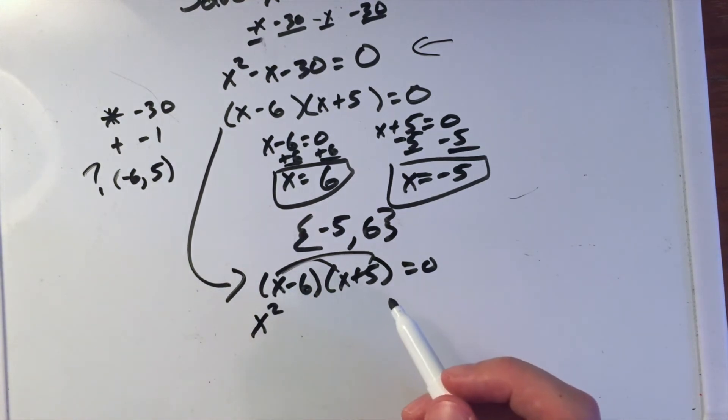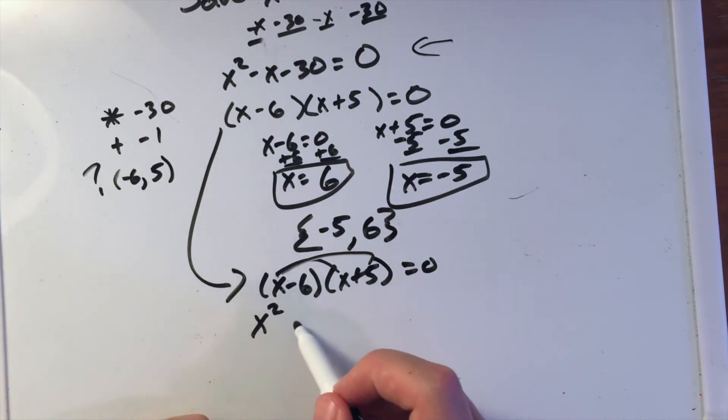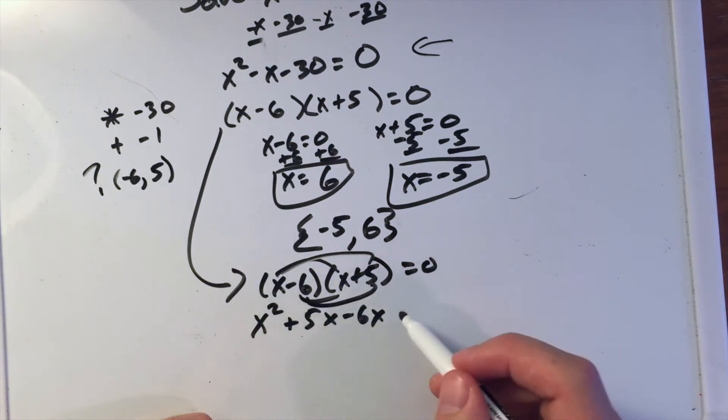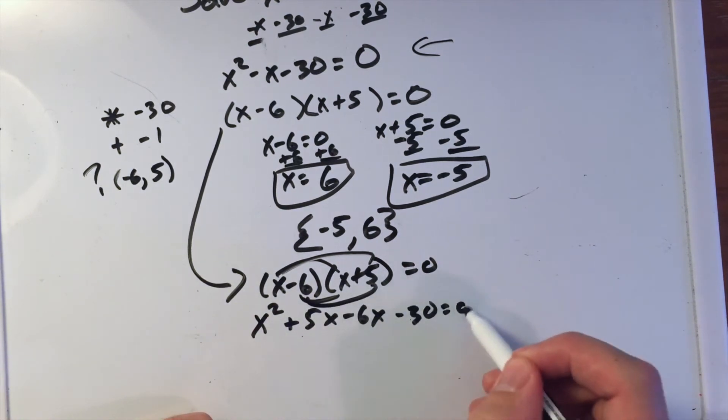First to the last, we have x times 5 is 5x, negative 6 times x is negative 6x, and negative 6 times 5 is negative 30 equals 0.